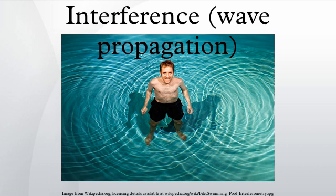Conventional light sources emit waves of differing frequencies and at different times from different points in the source. If the light is split into two waves and then recombined, each individual light wave may generate an interference pattern with its other half, but the individual fringe patterns generated will have different phases and spacings, and normally no overall fringe pattern will be observable. However, single element light sources, such as sodium or mercury vapor lamps, have emission lines with quite narrow frequency spectra. When these are spatially and color filtered and then split into two waves, they can be superimposed to generate interference fringes. All interferometry prior to the invention of the laser was done using such sources and had a wide range of successful applications.